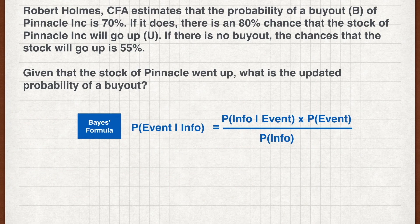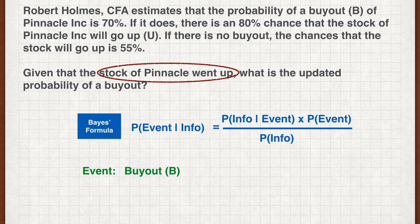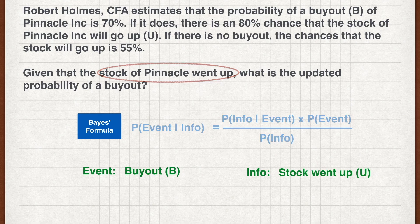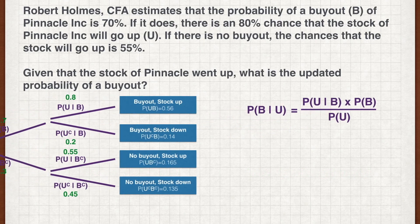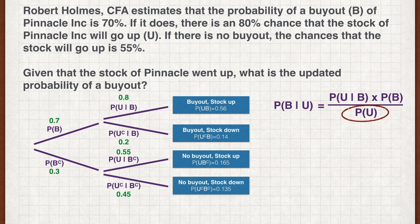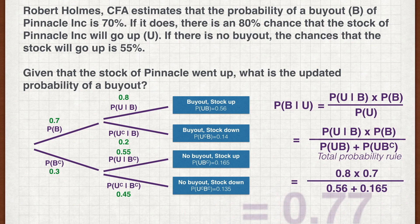Bringing up Bayes' formula, how do we determine which is the event and which is the new information? The event is the unknown — in this case, the buyout is the unknown at this point, therefore the event is B. The information is something new that we want to factor in. Given that we have information that the stock went up and we want to factor that in, the new information is therefore U. The probability that we want to find is P(B given U), and we can apply Bayes' formula to calculate it. Looking at the required terms, we have all of them except for the unconditional probability of U. We can use the total probability rule to calculate it by summing the two joint probabilities in which the stock went up. Given we have all the terms we need, plugging in the figures gives us an updated probability of a buyout of 0.77.